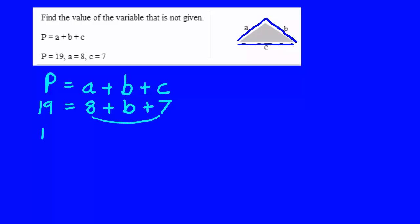Well, 8 and 7 are both constants. So we add them together on the right hand side before we do anything else. And that gives us 15 plus B on the right hand side. Then to find out what B is, we have to subtract off the 15 units so we can get B by itself.